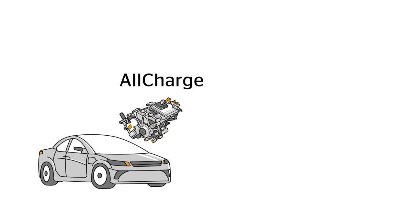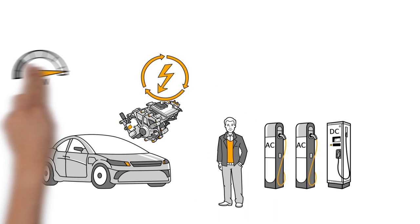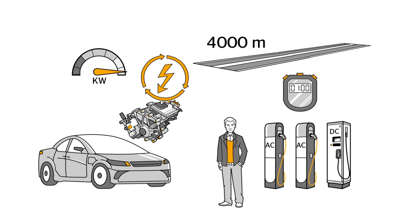Continental harnesses the electric drive train that electric vehicles already have and turns it into a universal charger. So no matter what kind of station David stops at, with AllCharge he can recharge his car anywhere. And the system gets the most out of every charge. For comparison, if each minute of AC charging previously added about 300 meters of range, now AllCharge technology delivers about 4000 meters in the same time.